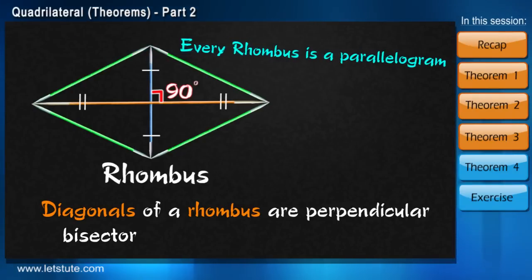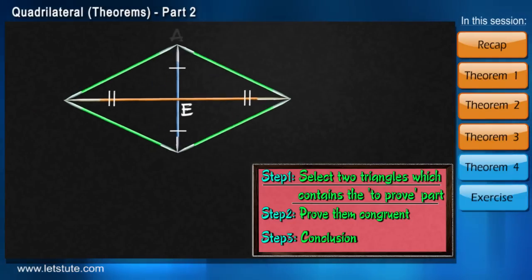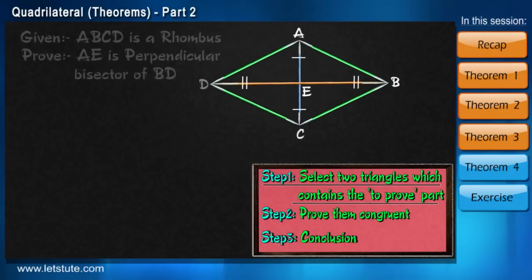Since it's a member of parallelogram family its diagonals will bisect each other. That means we will only have to show they bisect at right angles. Let's do the first step. Select the two triangles. Here the two triangles should be such that they form 90 degrees at point E. So which two triangles will you choose?